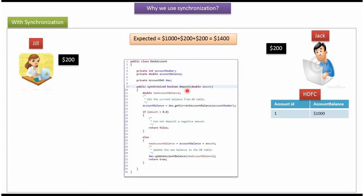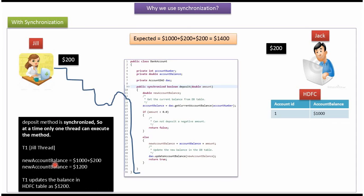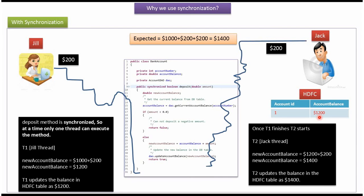Here you can see the deposit method and I have made it a synchronized method. So at a time, only one thread can execute this method. If one thread is executing this method, other threads have to wait. Both Jack and Jill transfer $200 each at the same point in time. Assume Jill's thread started first. Jill's thread calculates the new account balance — current account balance is $1000 and Jill wants to transfer $200, so new account balance is $1200. Jill's thread updates $1200 in the HDFC table. Current account balance is now $1200. Once Jill's thread finishes execution, Jack's thread starts, which is Thread 2.